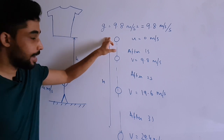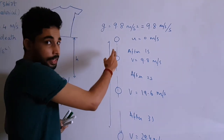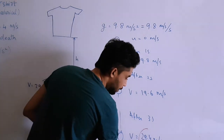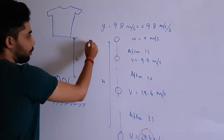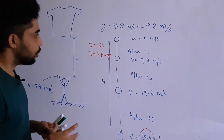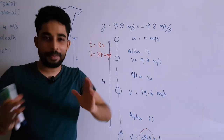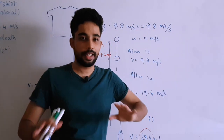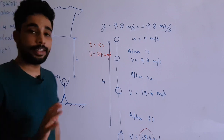After three seconds, the velocity increases by another 9.8, giving 29.4 meters per second. So t = 3 seconds gives us our target velocity. Importantly, this doesn't depend on what you drop — a ball, a t-shirt, or an elephant all fall at the same rate because g is the same for all objects. After 3 seconds, everything reaches 29.4 meters per second.